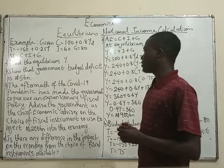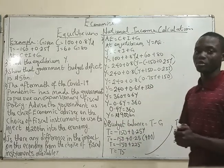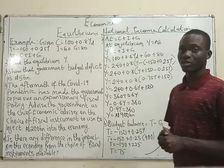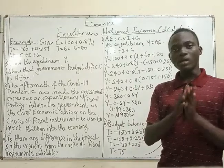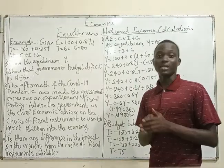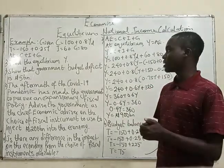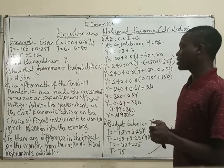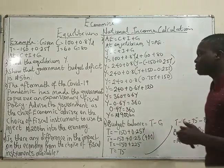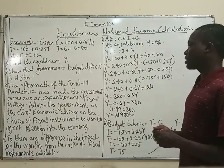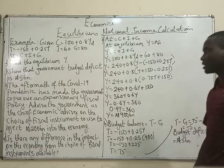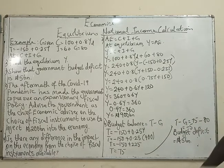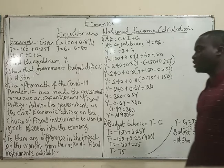Number one, we should find the equilibrium national income, which is the equilibrium Y. B, show that the government budget deficit is 5 billion. C, the aftermath of the COVID-19 pandemic has made the government pursue an expansionary fiscal policy — advise the government as the chief economic advisor on the choice of fiscal instruments to use to inject 200 billion into the economy.